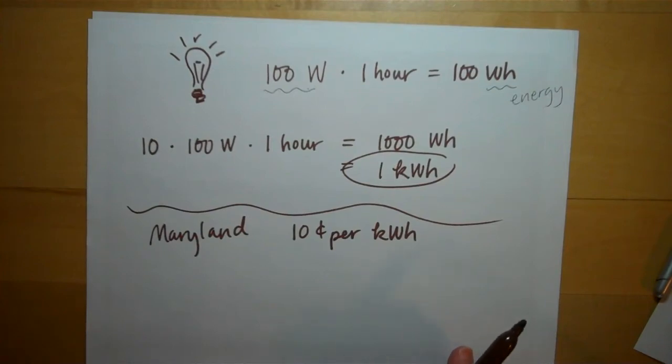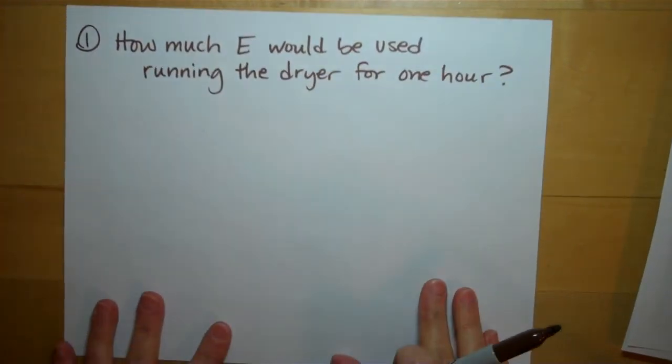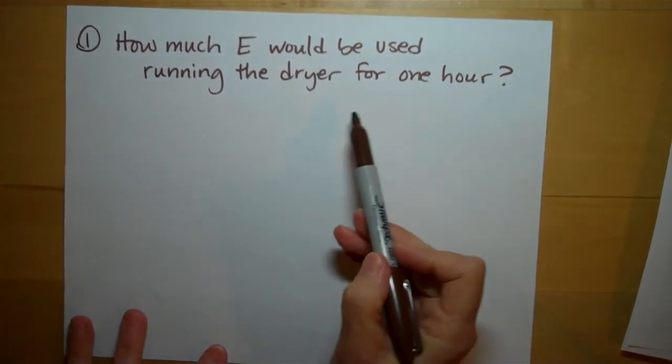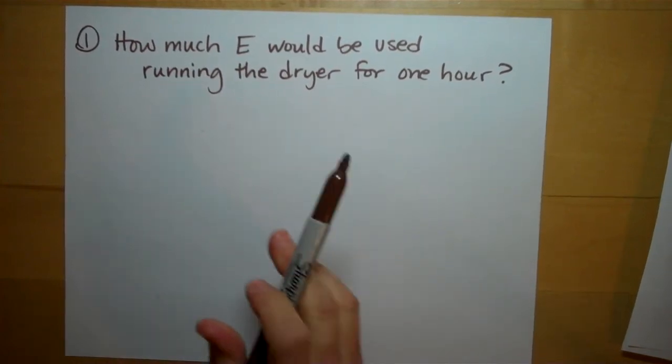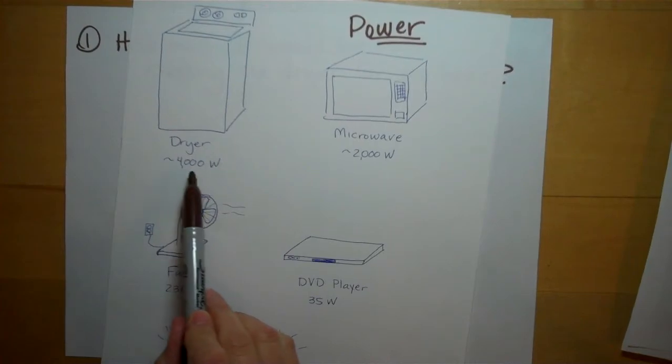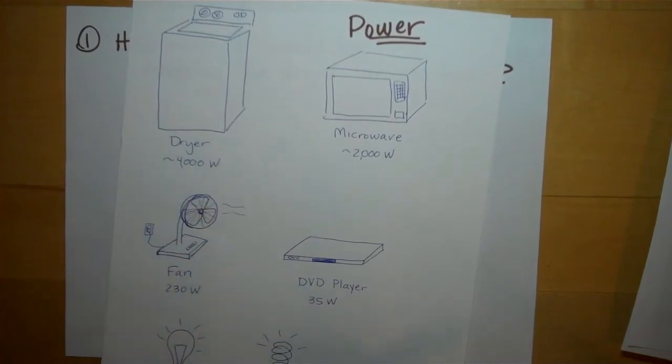Okay, let's do a couple of problems now. The first one I want to do is running the dryer. How much energy would be used to run the dryer for one hour? Well, going back to our dryer, we said, and you'd be given this, you wouldn't have to know this, you'd be given that the dryer uses 4,000 watts of power.